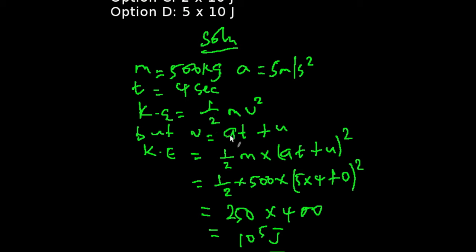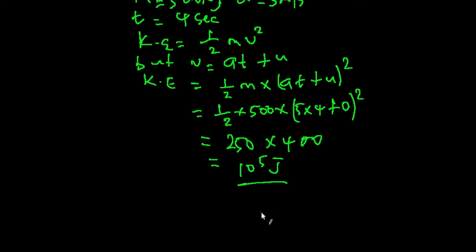But our velocity is equal to at plus u, where a is acceleration, t is our time, and u is our initial velocity. So our kinetic energy is simply half m v squared. So we are going to be having half times 500 times 5 times 4 plus 0, our u is equal to 0, all squared. That would simply give us 250 times 400.